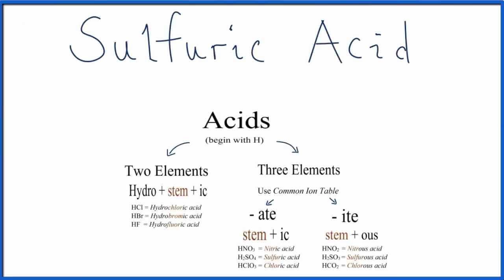To write the formula for sulfuric acid, we'll use this flowchart to guide us. We can see right away, if it has two elements, it's going to begin with hydro. There's no hydro up here, so we can eliminate this, and we know that there'll be three elements.